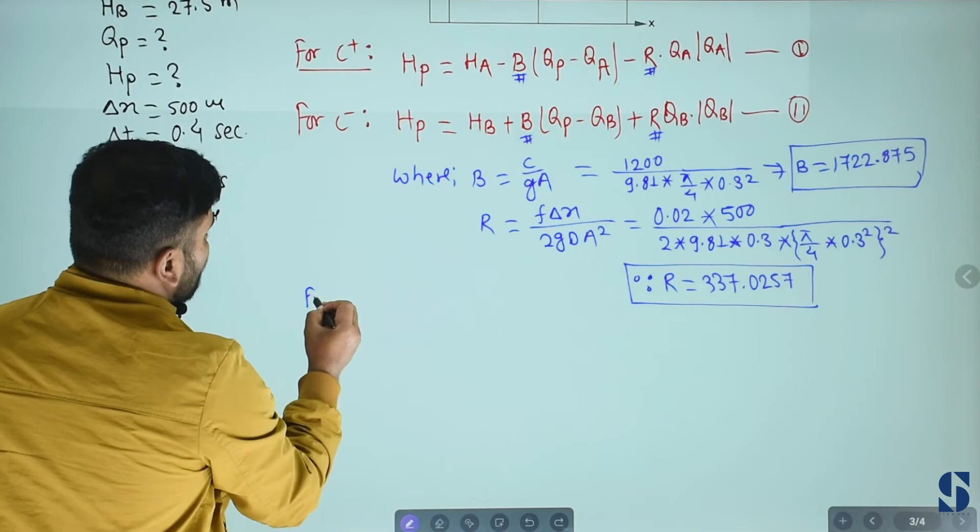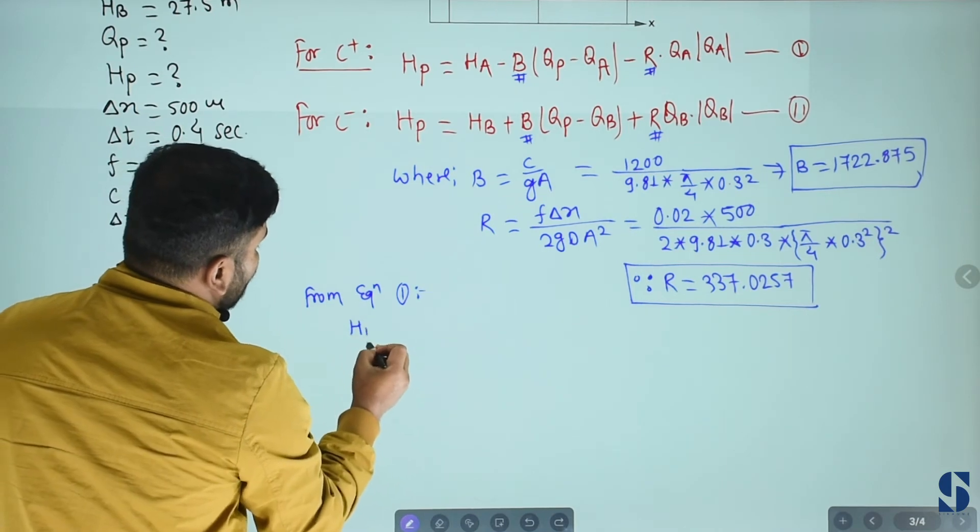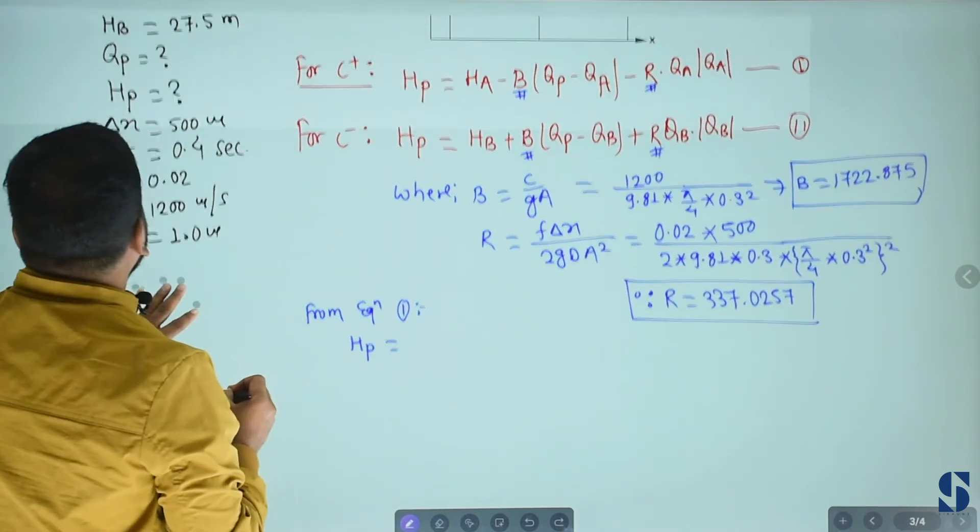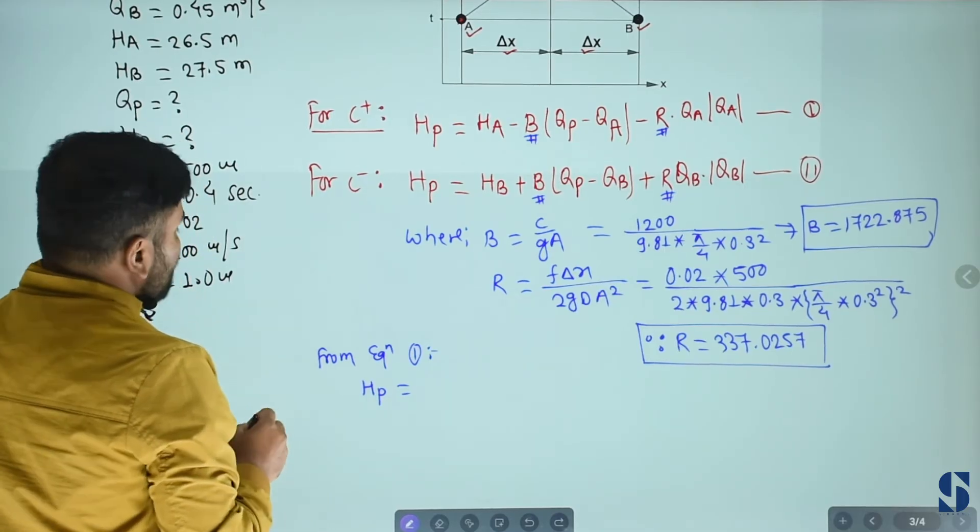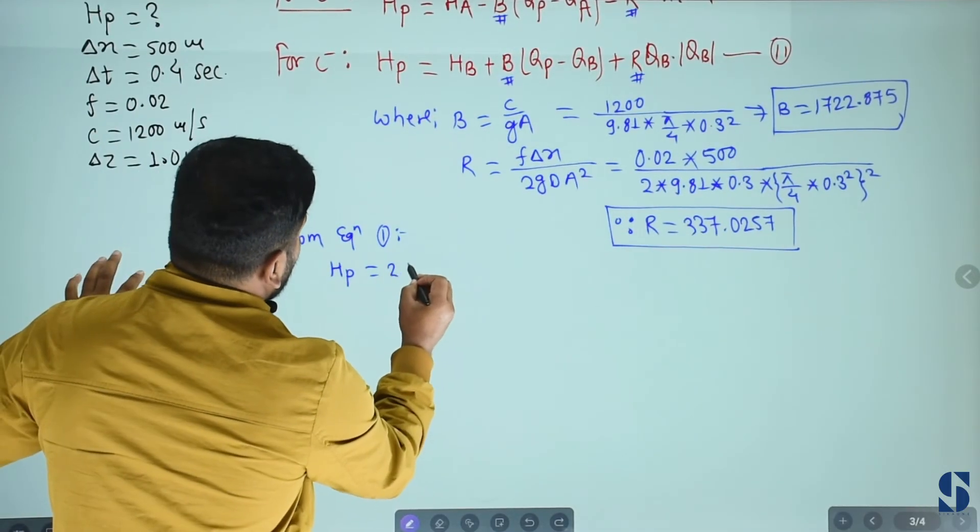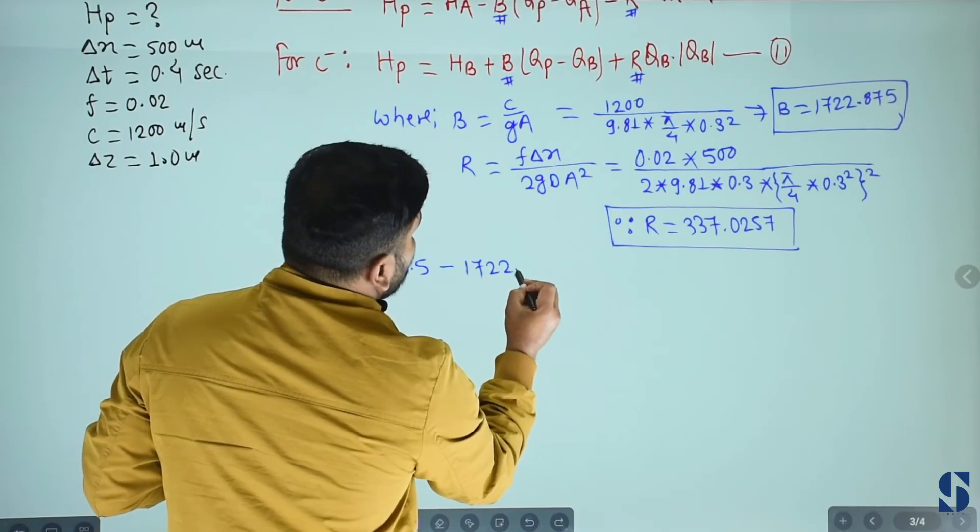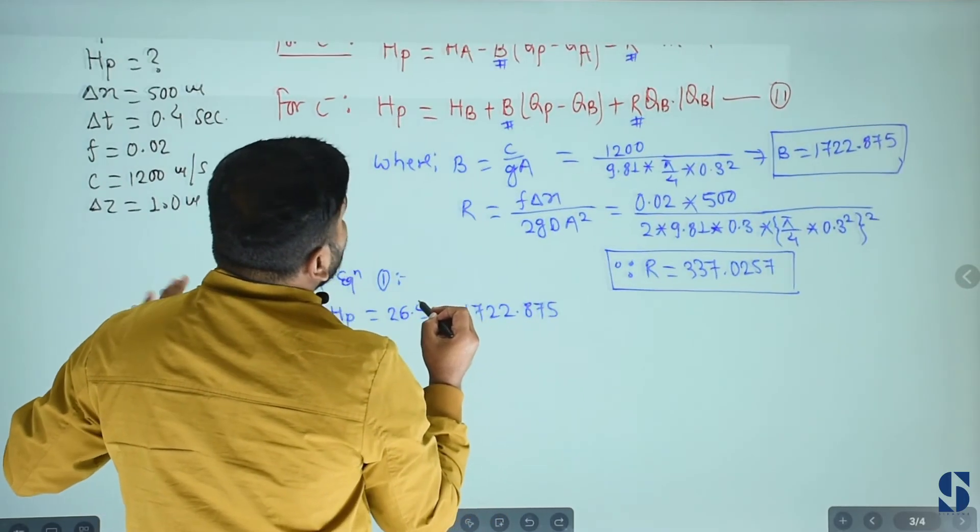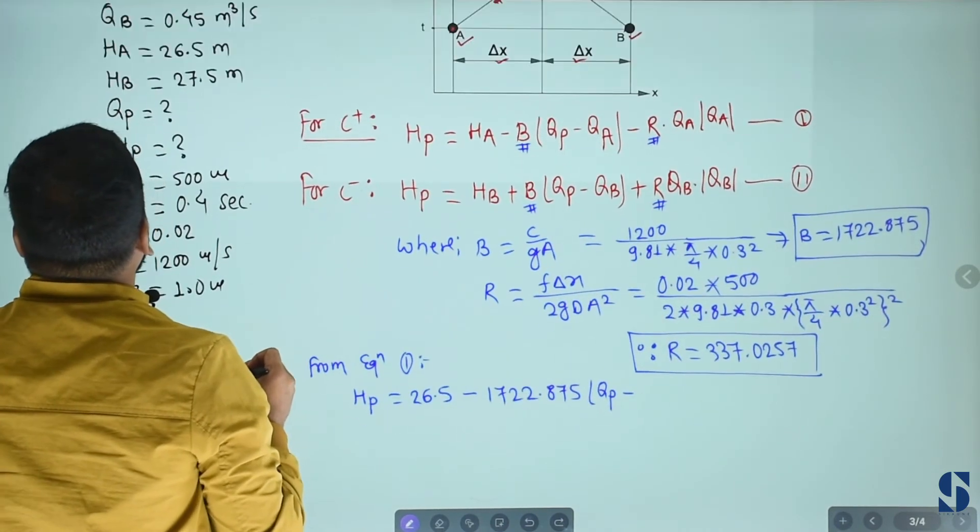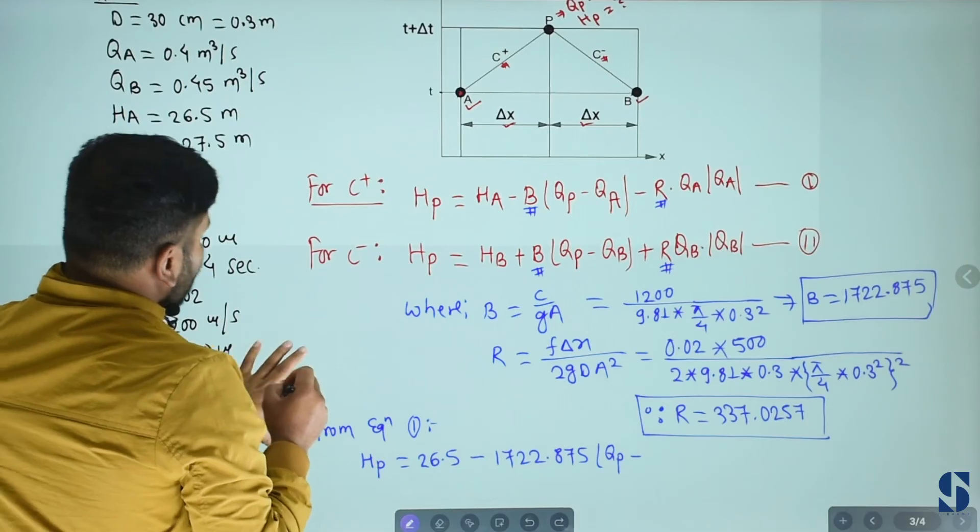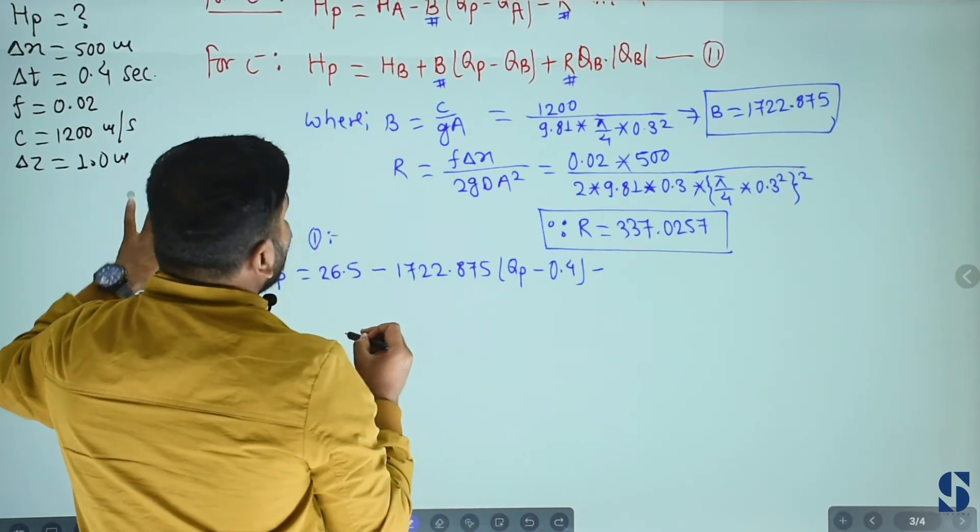From equation first, substitute values. HP equals to 26.5 minus B 1722.875 times QP minus QA value 0.4.